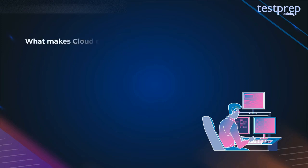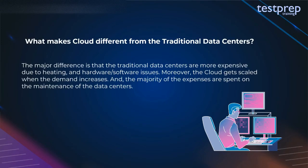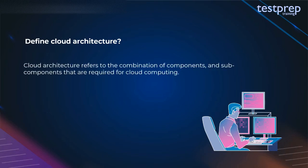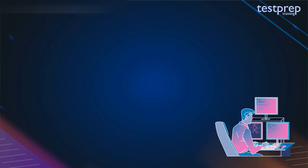Question 15: What makes cloud different from traditional data centers? Traditional data centers are more expensive due to heating and hardware/software issues. The cloud scales when demand increases, and the majority of expenses in traditional setups are spent on maintenance. Question 16: Define cloud architecture. Cloud architecture refers to the combination of components and sub-components that are required for cloud computing.